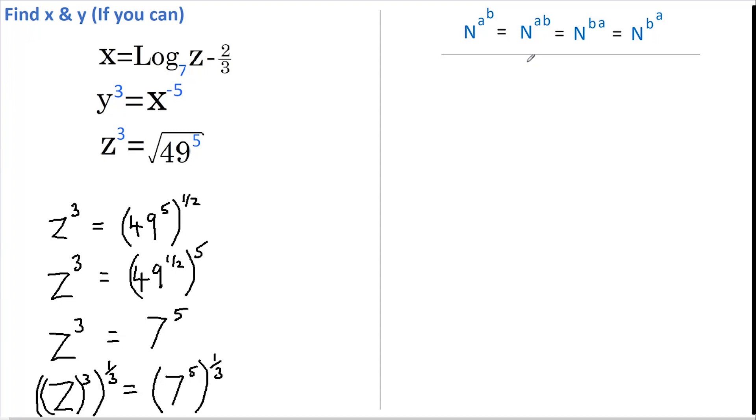So we get Z to the 3 multiplied by 1 third, and on the right hand side we get 7 to the power of 5 multiplied by 1 third. 3 times 1 third is 1, so this is just Z.